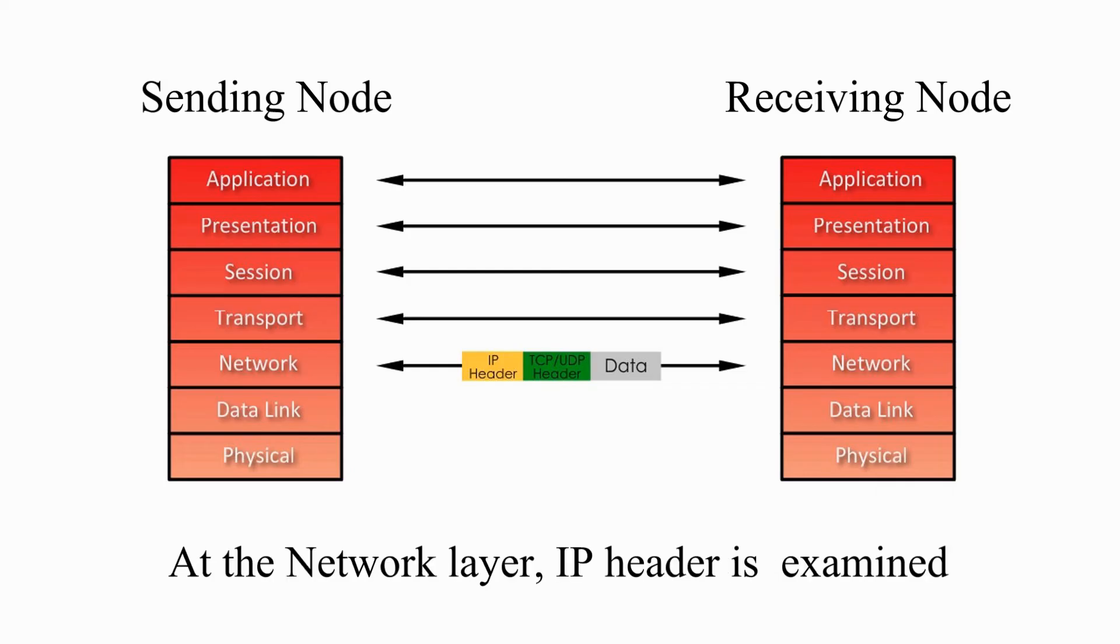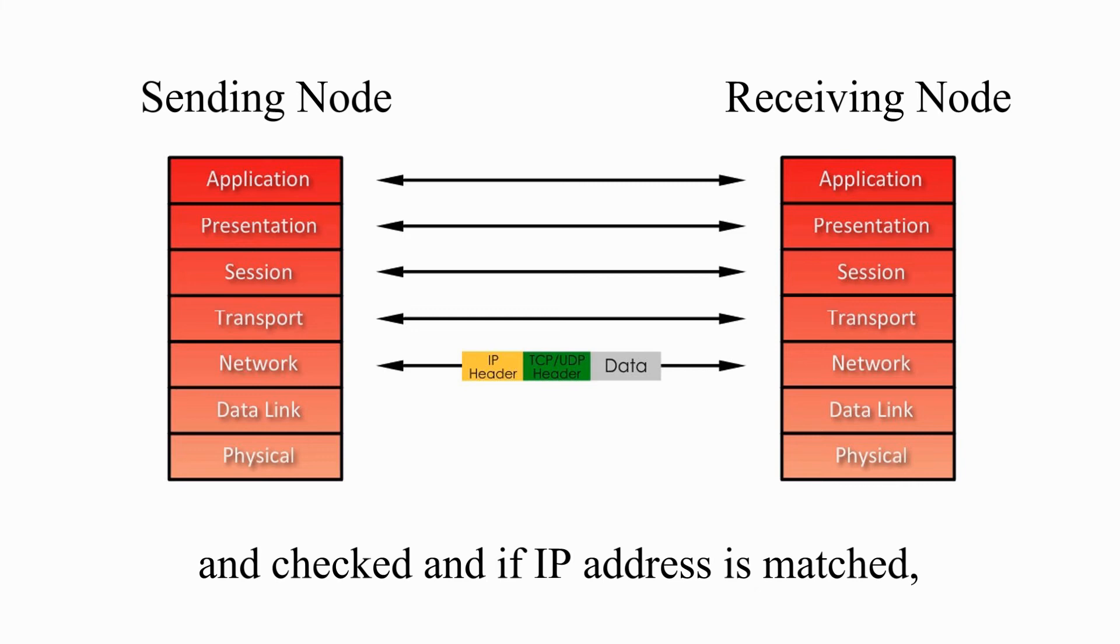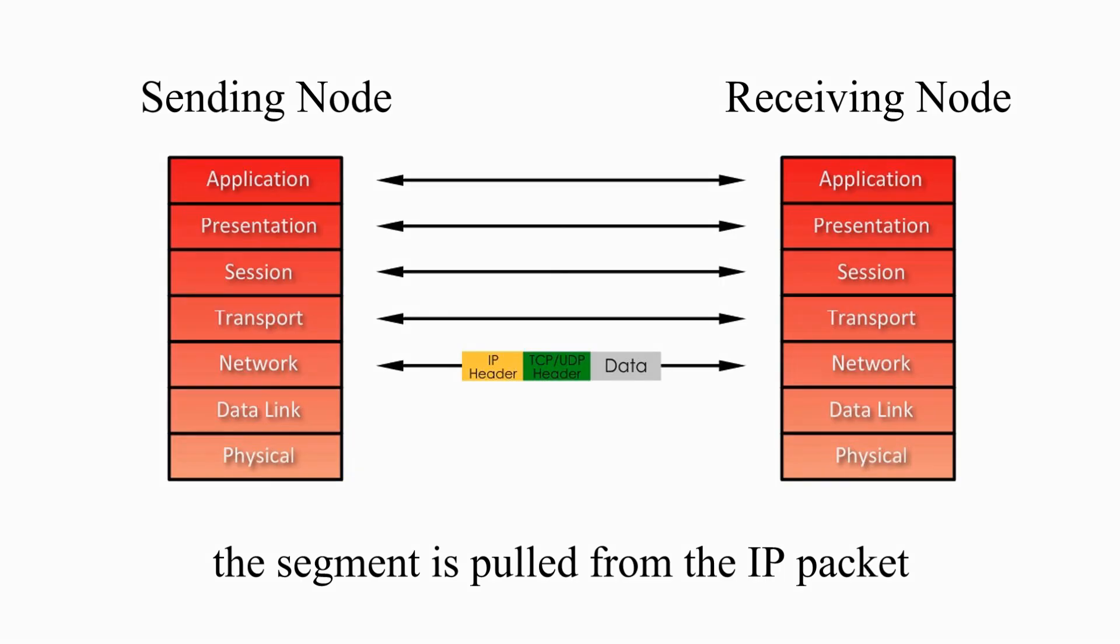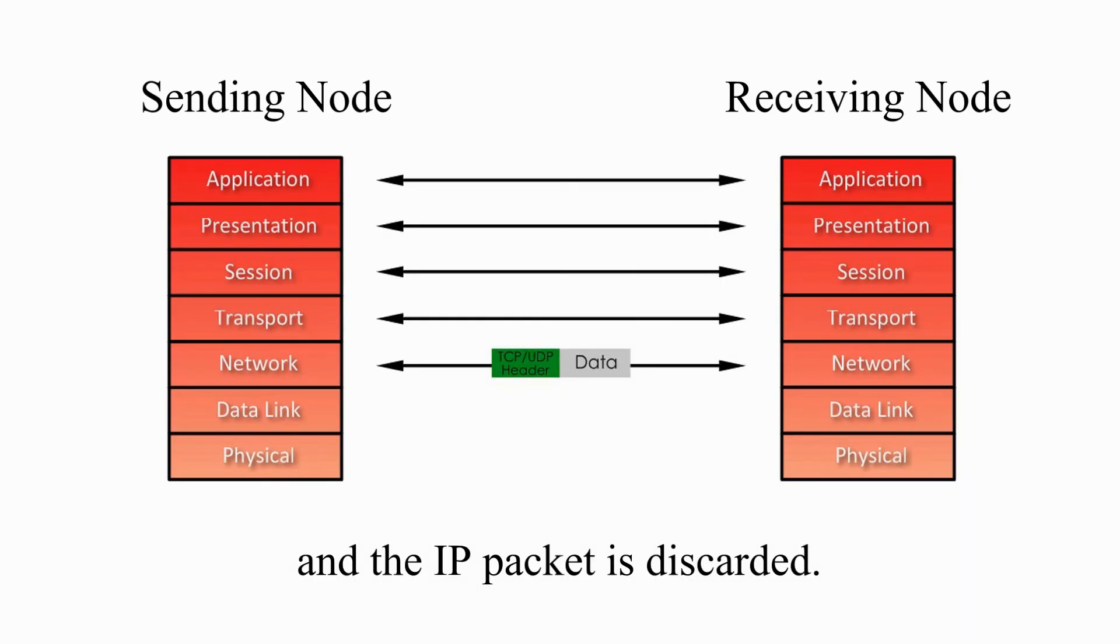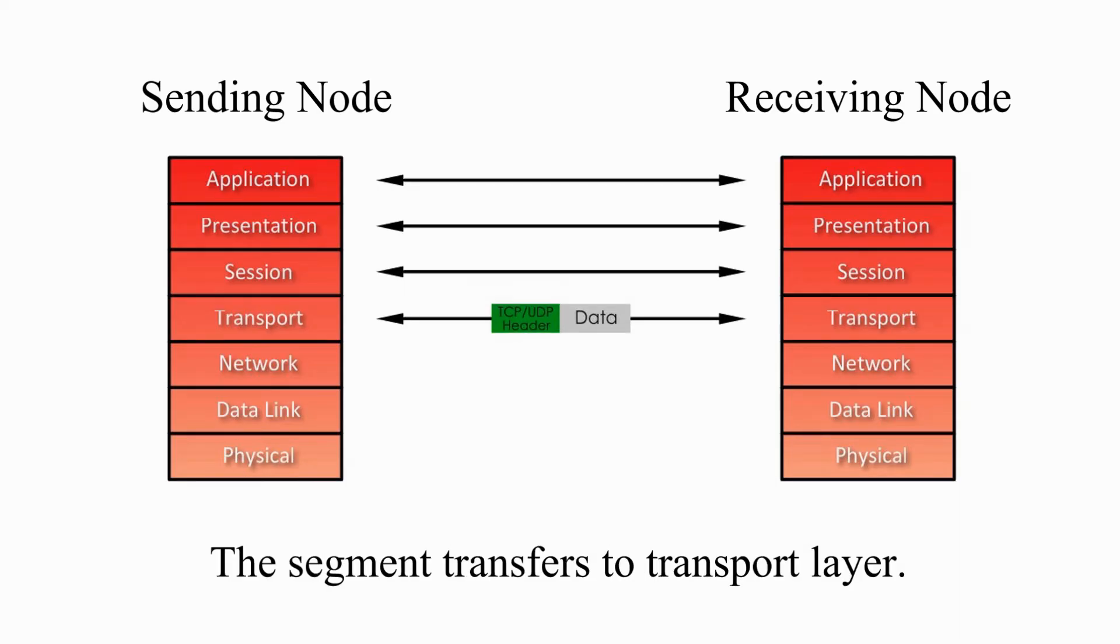At the network layer, IP header is examined and checked, and if IP address is matched, the segment is pulled from the IP packet, and IP packet is discarded. The segment transfers to the transport layer.